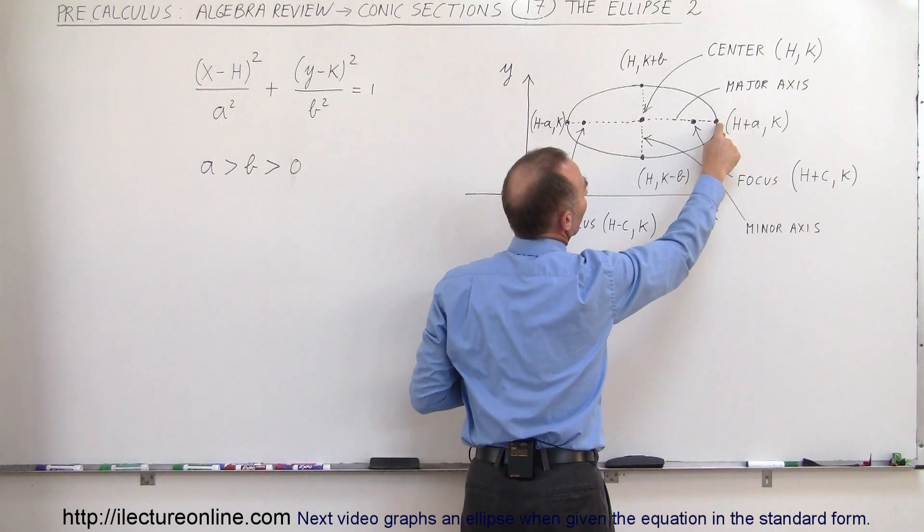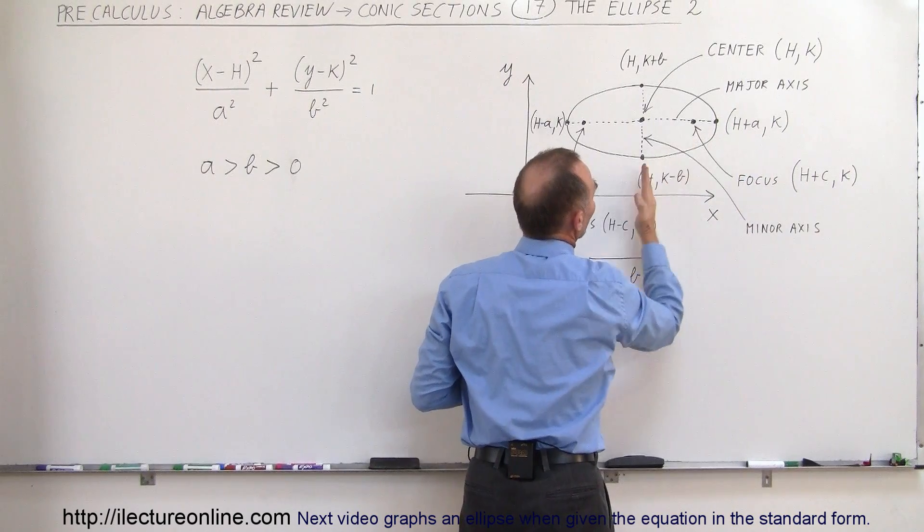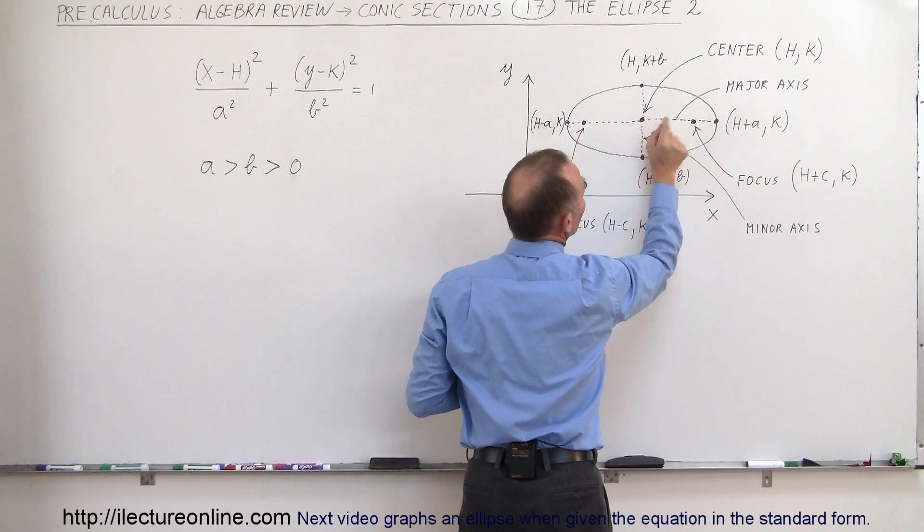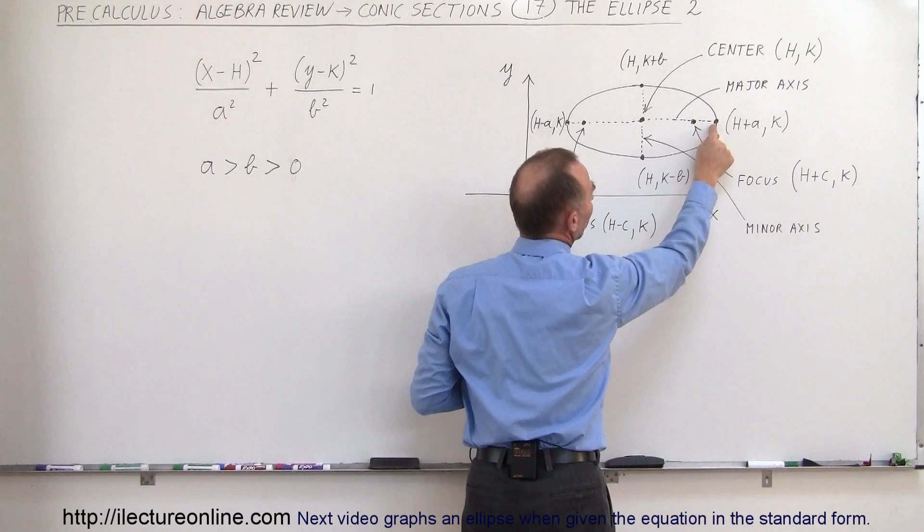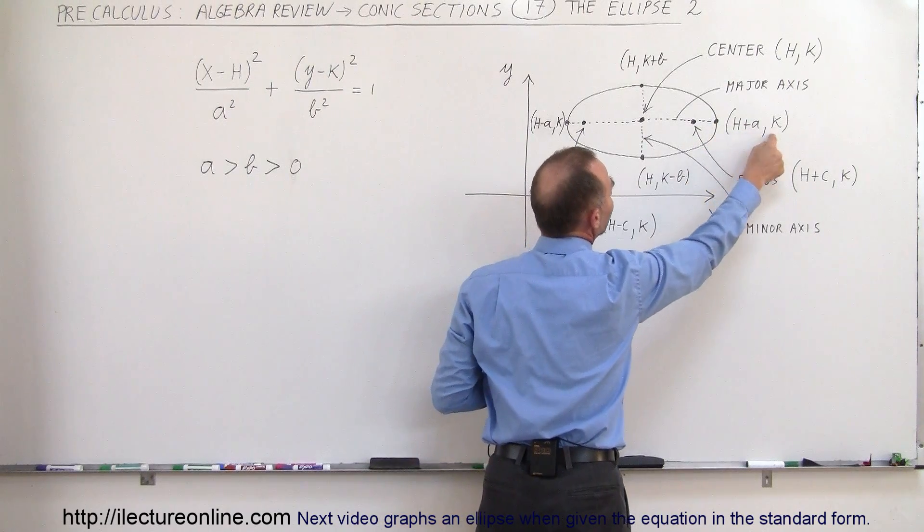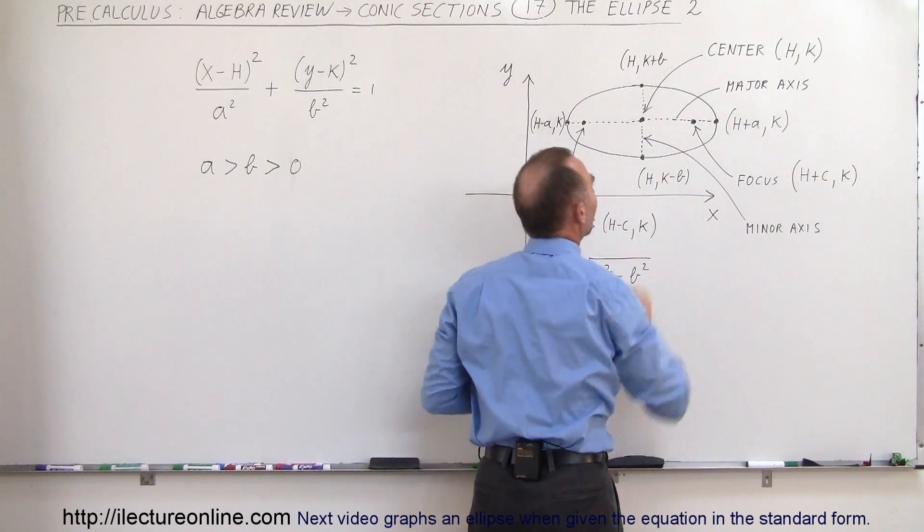Notice that the vertex here on the right side of the major axis is (h+a, k). So h is the center, a would be the distance from the center to the vertex right here, so h plus a. And k would be, of course, the y value of that coordinate.